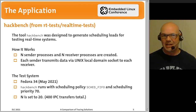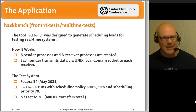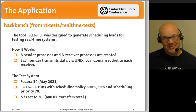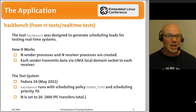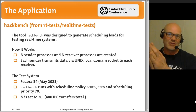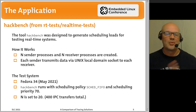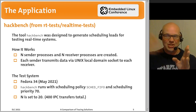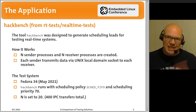The application I chose was Hackbench, a tool used to generate scheduling load on the CPU. Hackbench uses a lot of inter-process communication, so I thought it would be a nice application for my tracing tests. The way Hackbench works: you create N senders and N receivers, and a little piece of data is sent through Unix local domain sockets. Each sender sends to each receiver, so with 20 senders and 20 receivers, there are 400 IPC events.